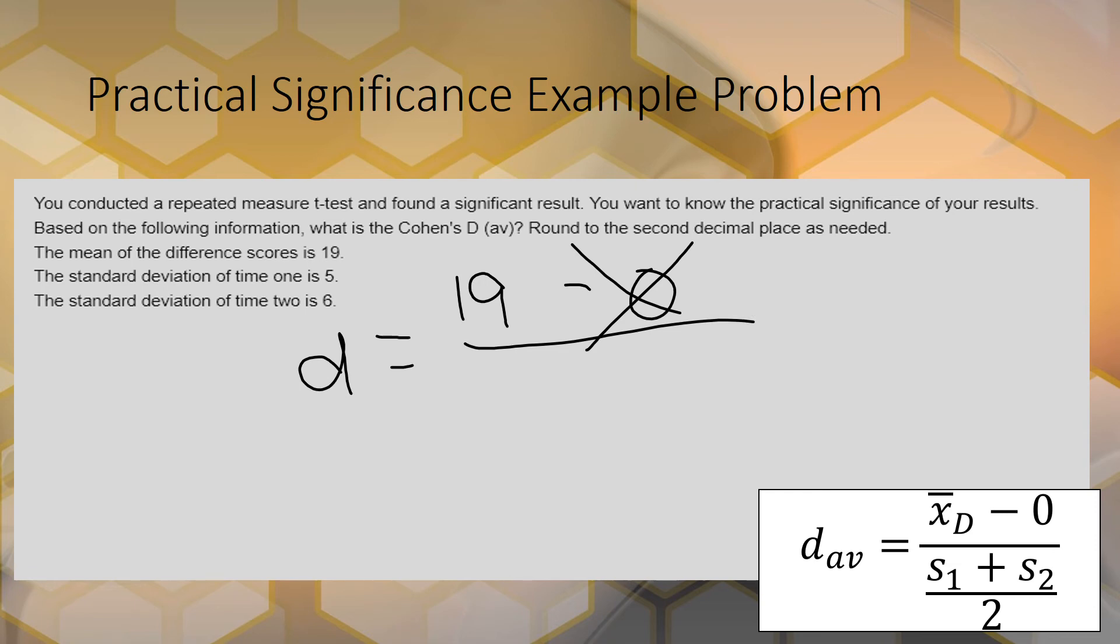Most of the time it's going to be 0, and in this class it always will be 0, but sometimes it's not 0. Then we have standard deviation from time 1 plus standard deviation from time 2, divided by 2. You want to put parentheses around this when there's a fraction, so you want to do what's in the parentheses first.